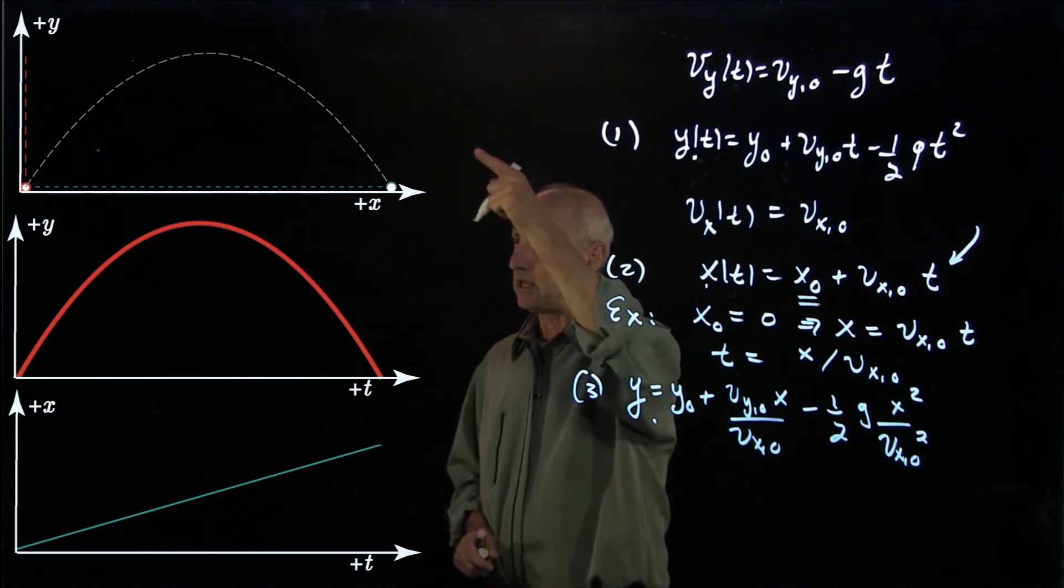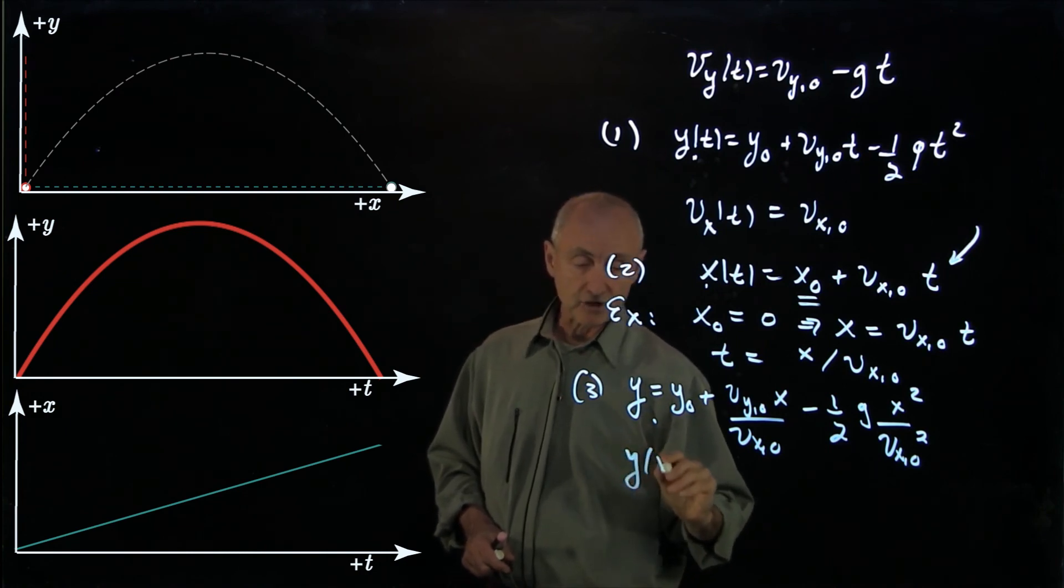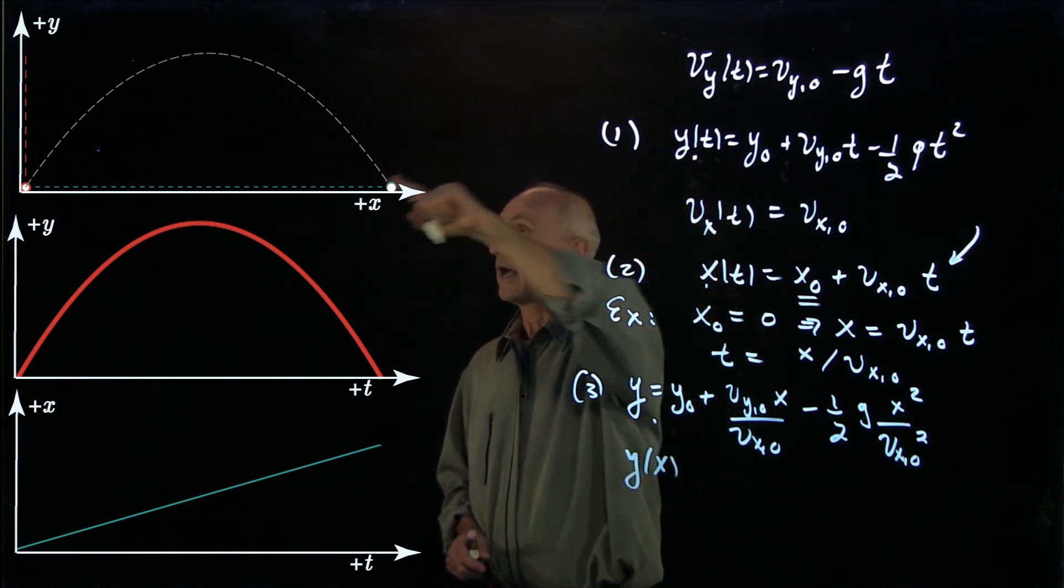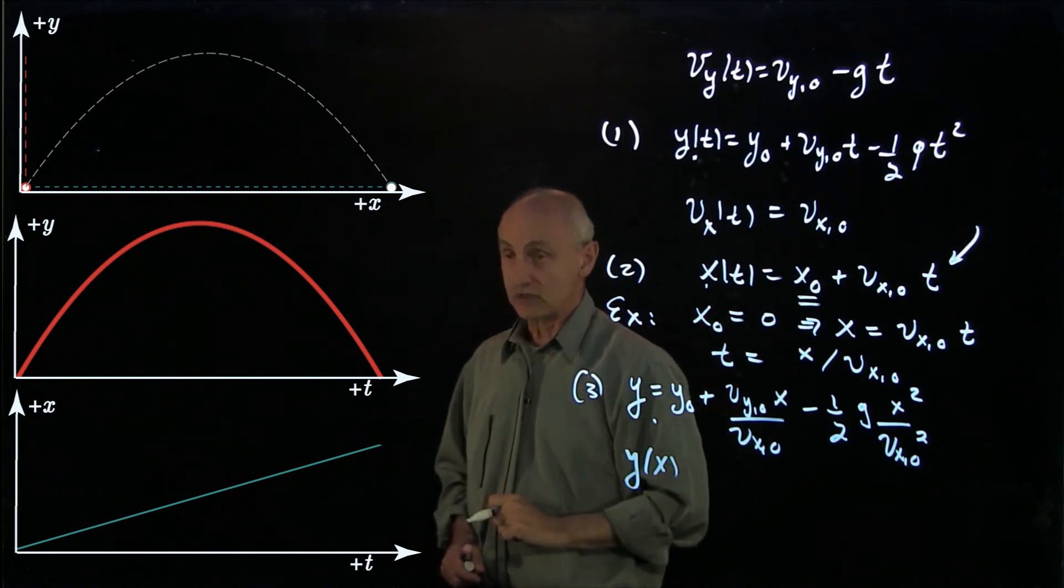And so we see three separate representations of this motion: y as a function of x, y as a function of t, and x as a function of t.